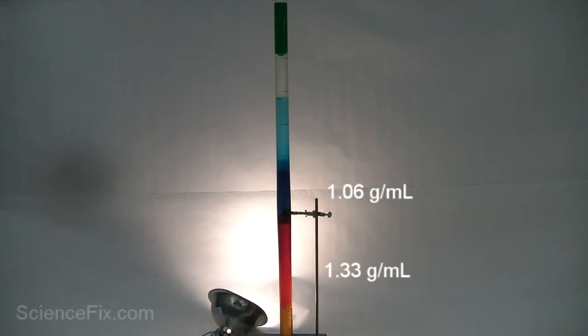So at the bottom, you see 1.42 is the highest density, and then the densities decrease as you go up the column of liquids.